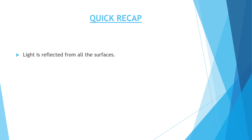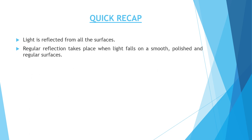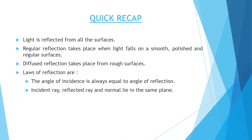So our chapter is over. Let's take a quick recap. Light is reflected from all surfaces. Regular reflection takes place when light falls on a smooth, polished, and regular surface. Diffused reflection takes place from rough surfaces. There are two laws of reflection: Number 1, the angle of incidence is always equal to the angle of reflection. Number 2, the incident ray, reflected ray, and normal lie in the same plane. The image formed in a plane mirror undergoes lateral inversion.